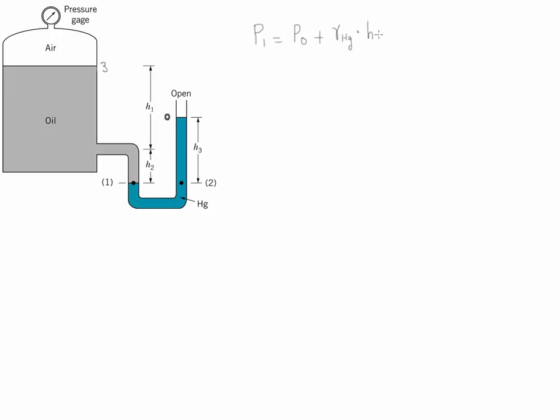Notice that because we're looking at gauge pressure, the value of P0 is going to be equal to zero. Therefore, P1 is simply gamma Hg times H3.